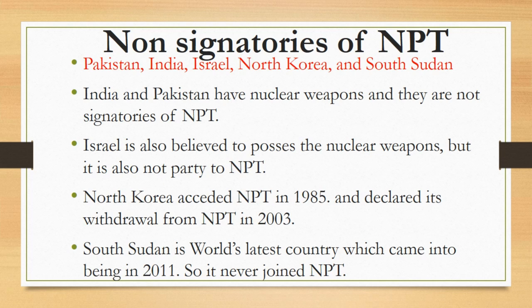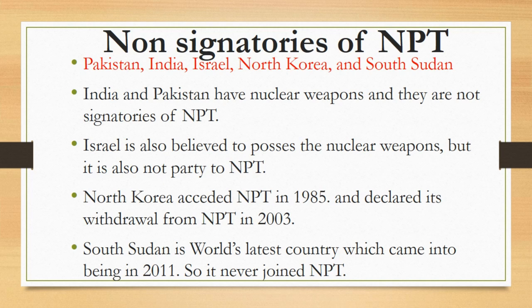Similarly, Israel is also believed to possess nuclear weapons, but it is also not party to NPT. North Korea acceded to NPT in 1985, but it never followed the clauses of the treaty and declared its withdrawal in 2003, so North Korea is also not a signatory. South Sudan is the world's latest country, having come into being in 2011, and so it never joined NPT. Almost 191 UN states are still adhered to NPT.